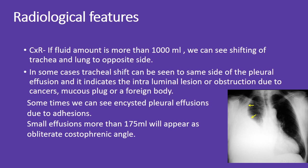Regarding radiological features on chest X-ray (CXR): if fluid amount is more than 1,000 mL, we can see shifting of the trachea and lung to the opposite side. In some cases, tracheal shift can be seen to the same side as the pleural effusion, indicating an intraluminal lesion or obstruction due to cancers, mucus plug, or foreign body. Sometimes we can see encysted pleural effusions due to adhesions.